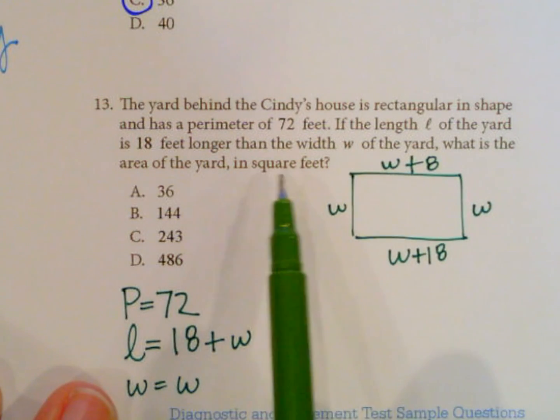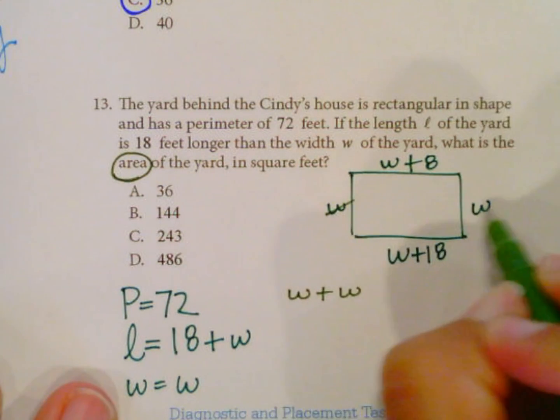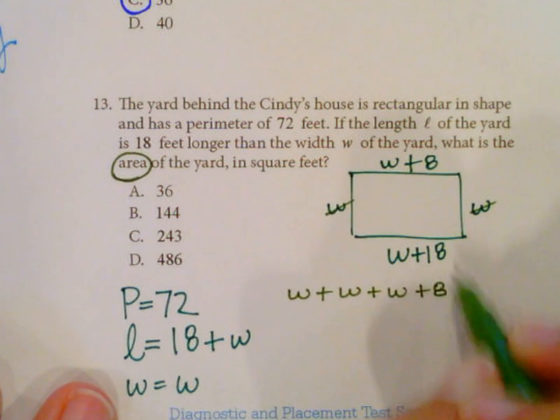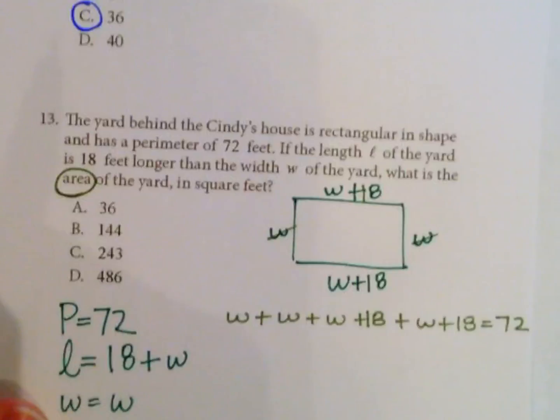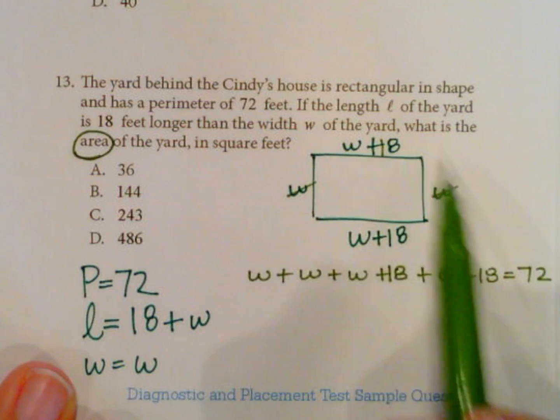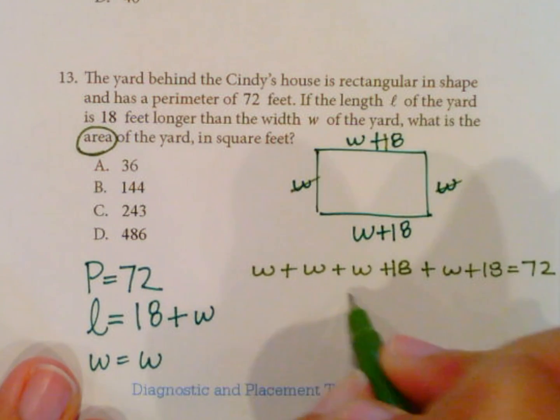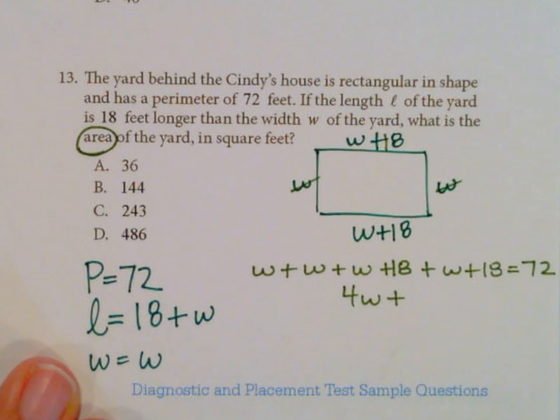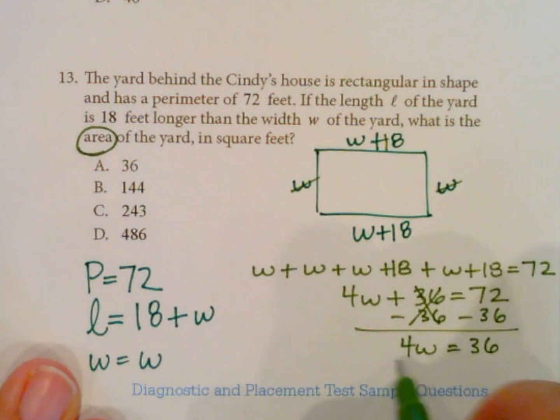We're going to take those values and use this perimeter to find what the width is, and then we can use that to find the area, since that's what we're looking for. So I've got w plus w, that's that one and that one, plus w plus 18, plus w plus 18. All of that equals 72, that's my perimeter. I know all the way around the perimeter of this rectangle equals 72, and I just added each of the sides. So all together we've got four w plus 18 times 2, which is 36, equals 72. And then we can subtract 36, subtract 36. 4w equals 36, and we divide by 4.